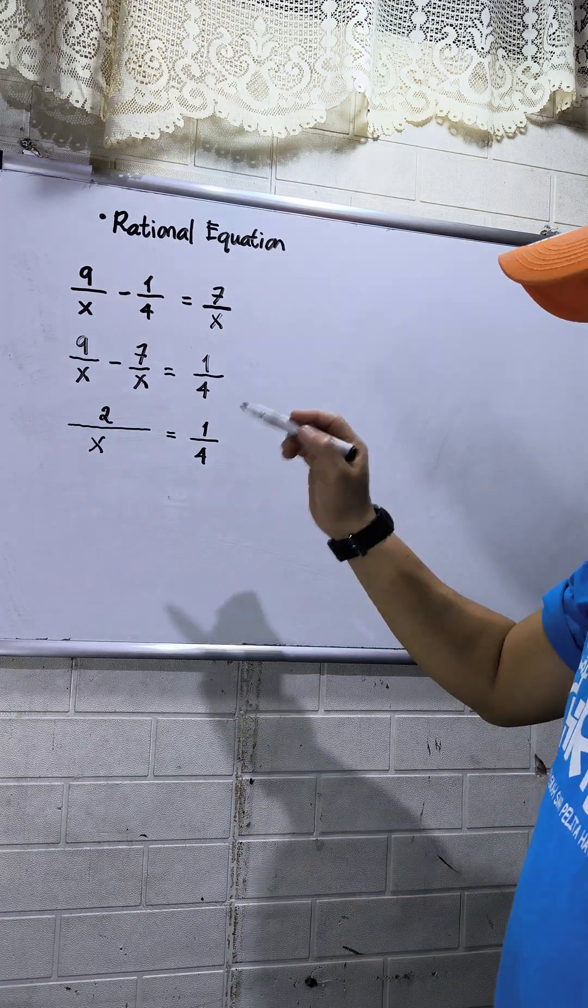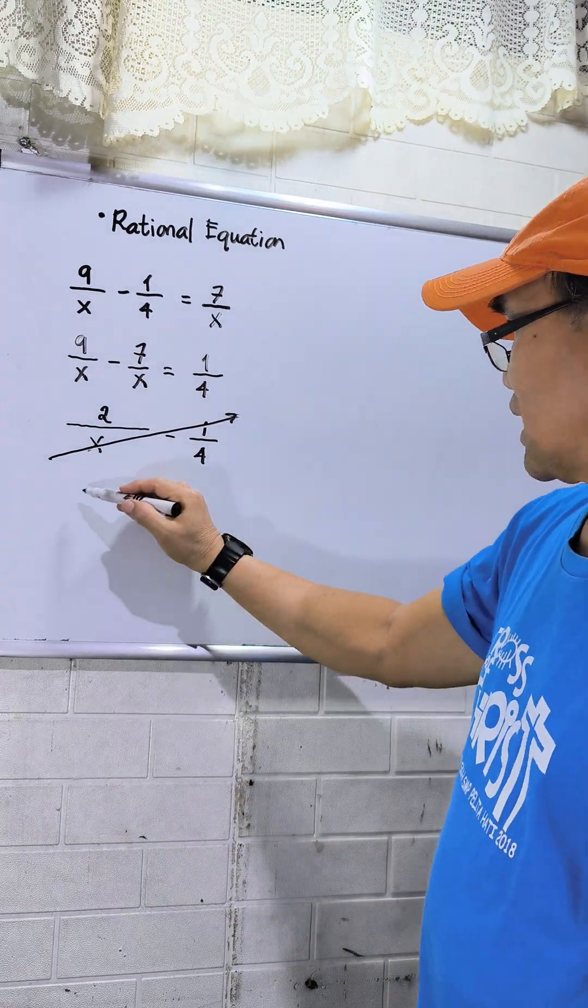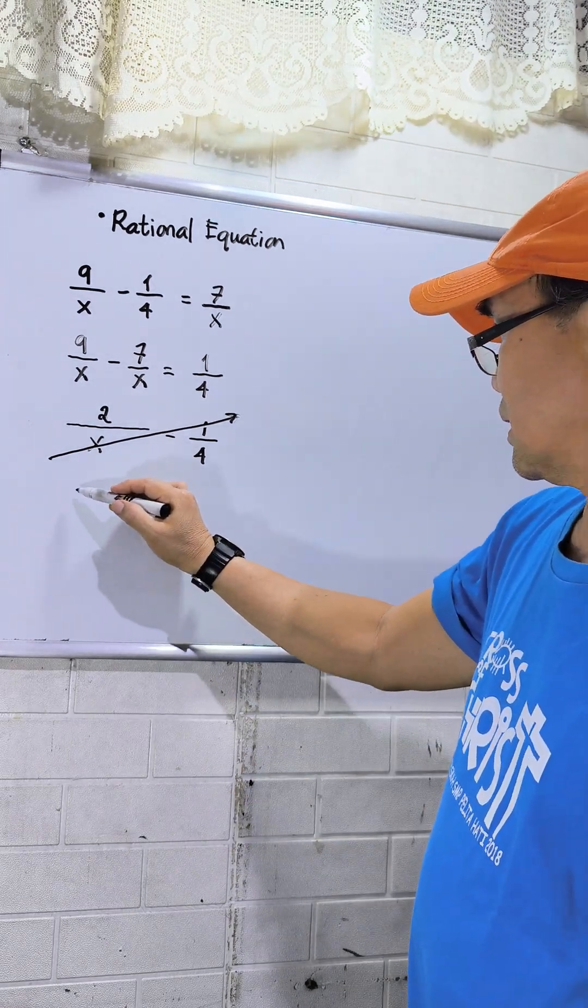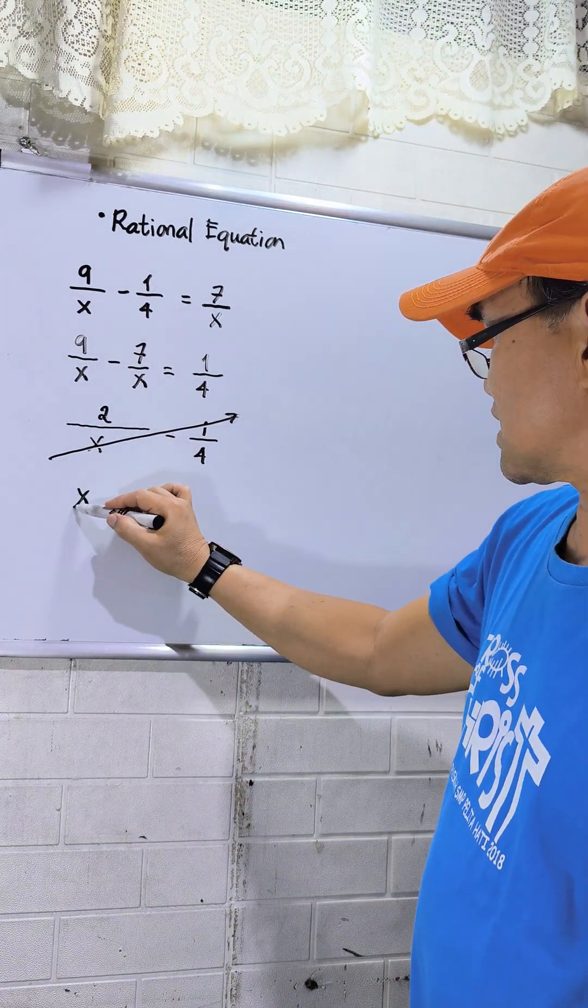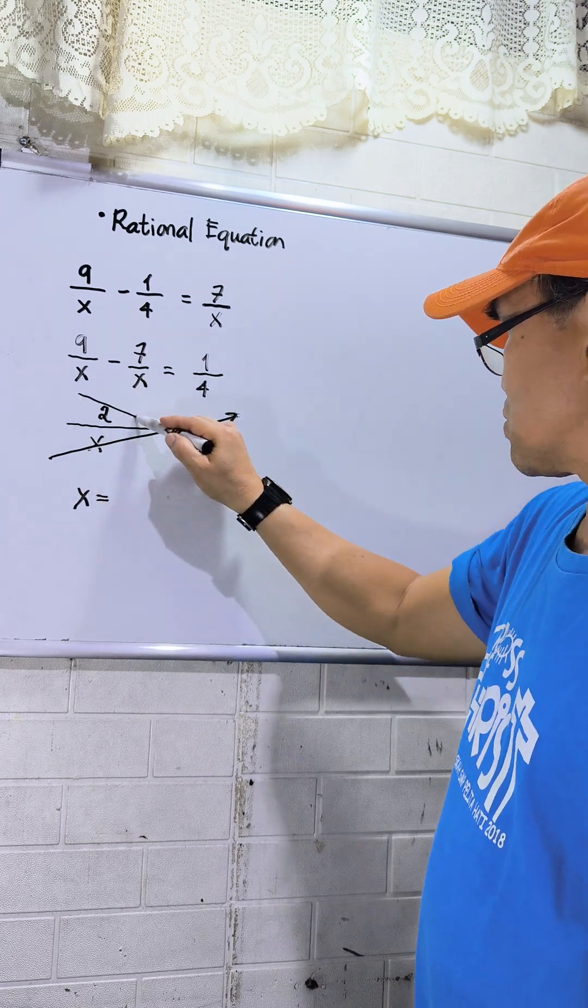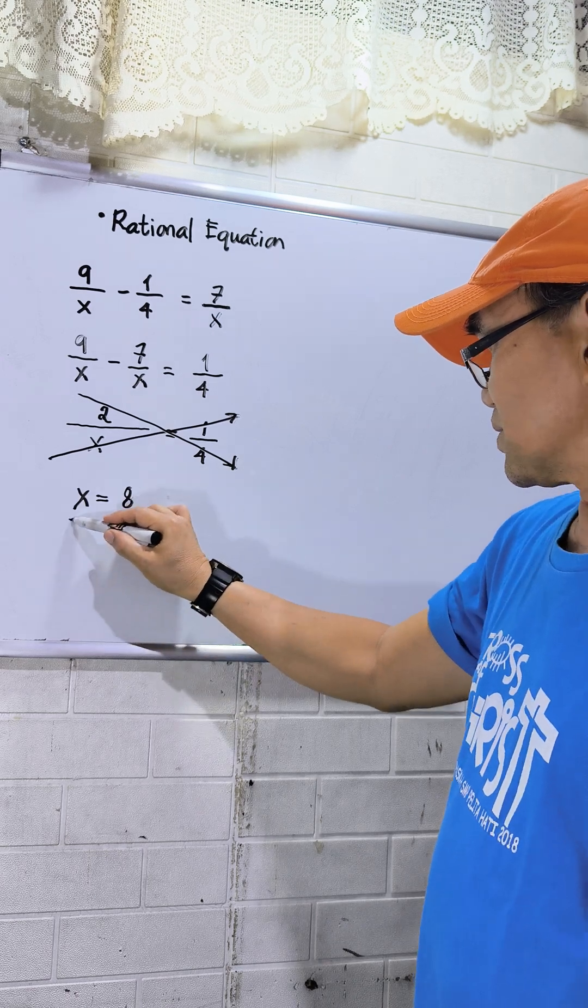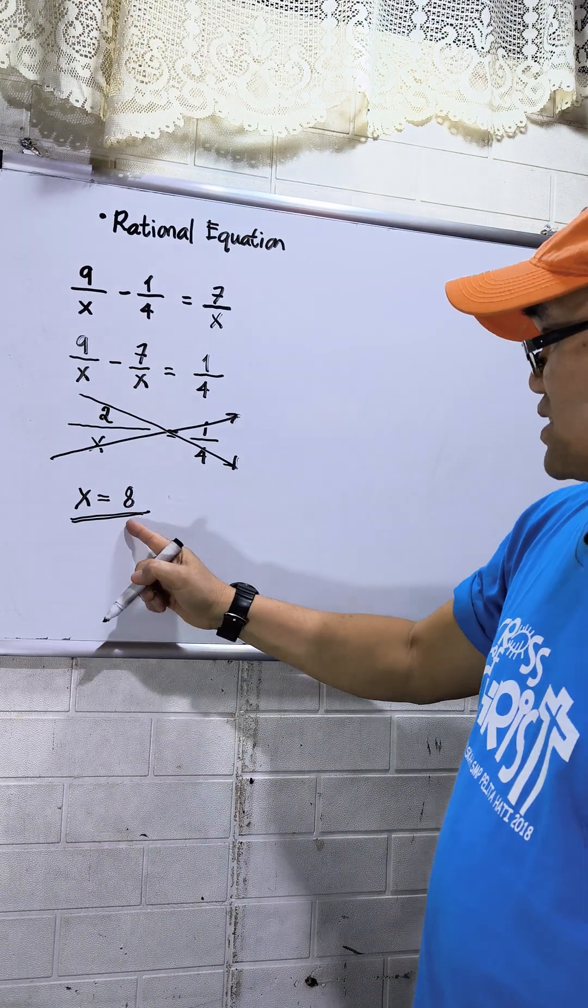Okay, to solve the value of x, cross multiplication or cross multiply. So that will be x. Take note, this is equal. Then cross multiply also. So 2 times 4, that is 8. So this is now the value of x.